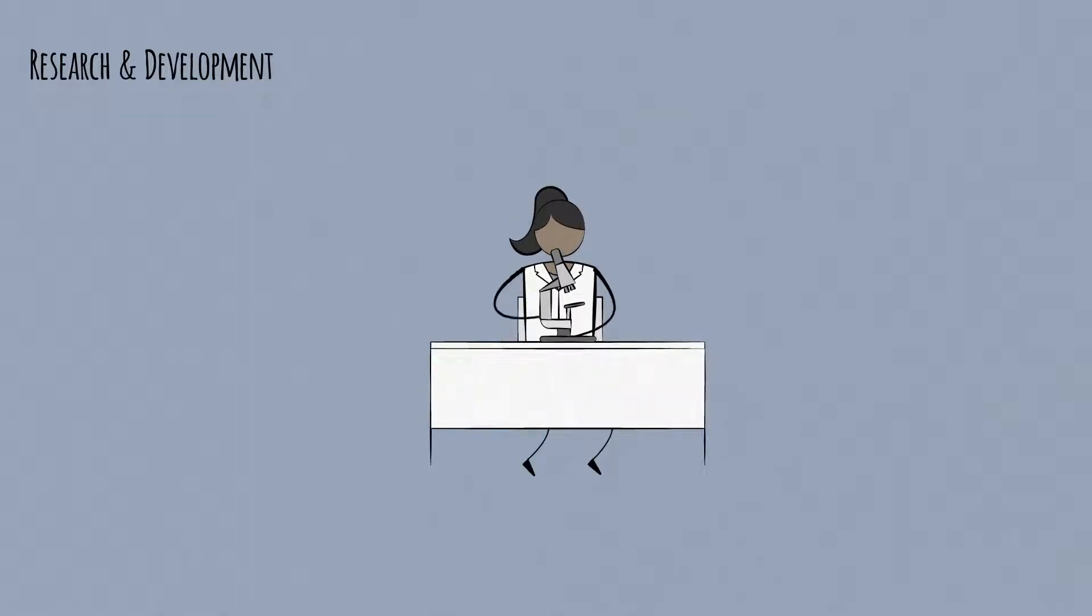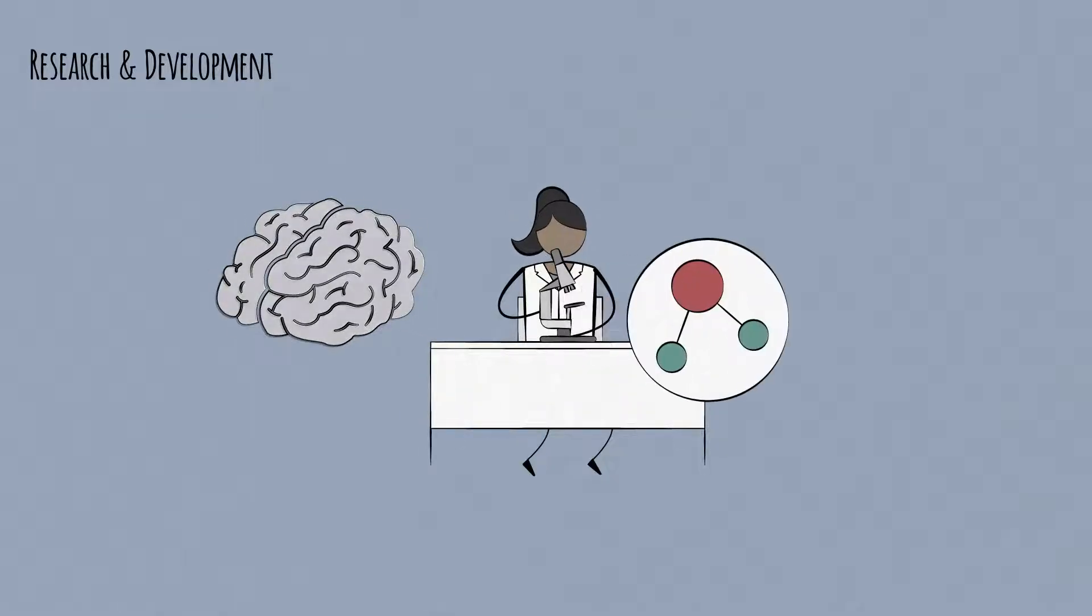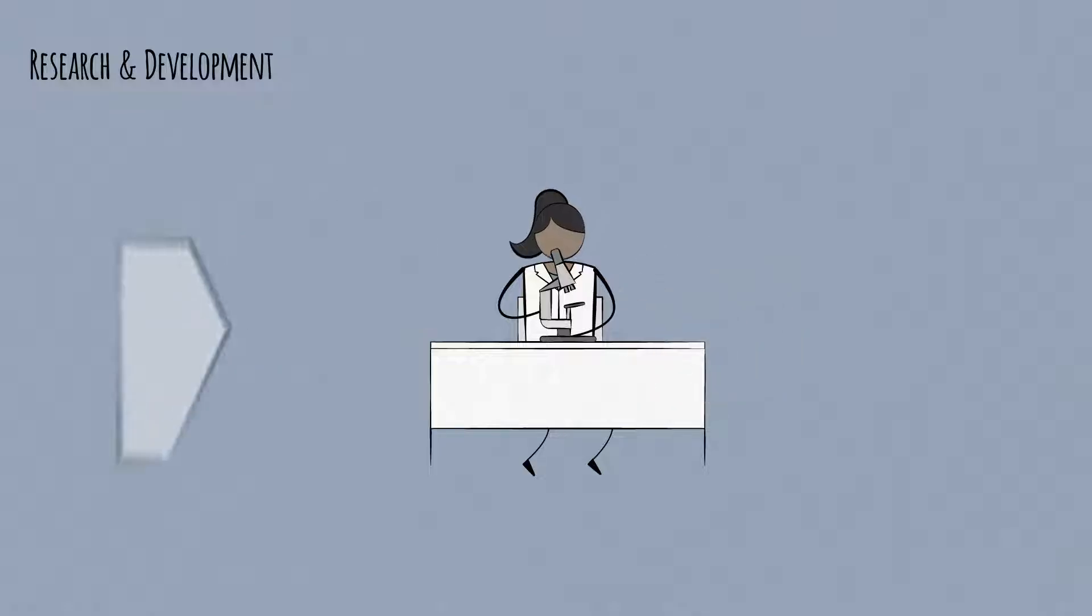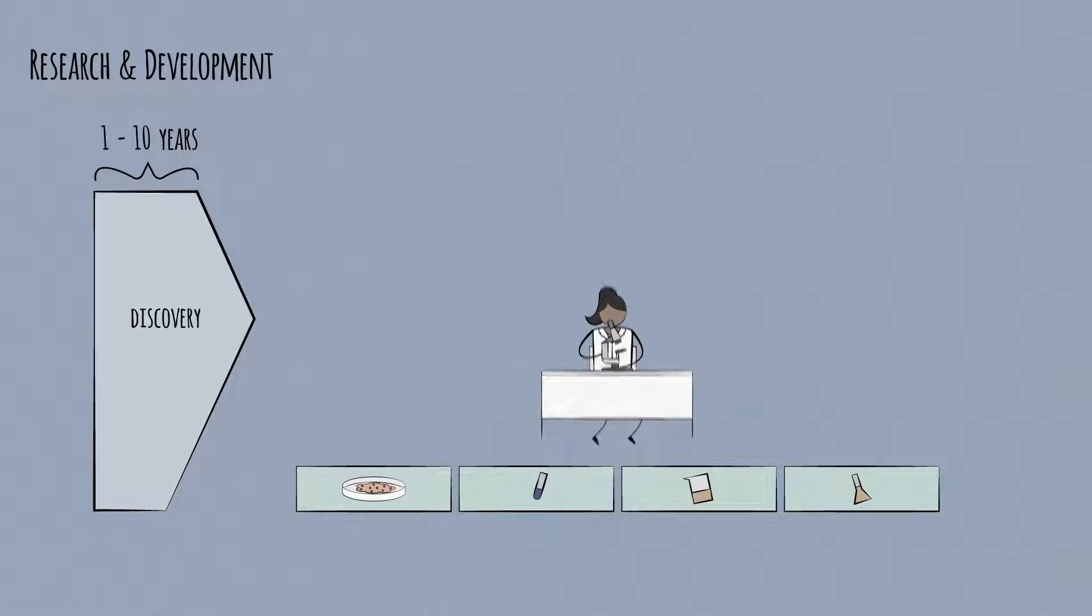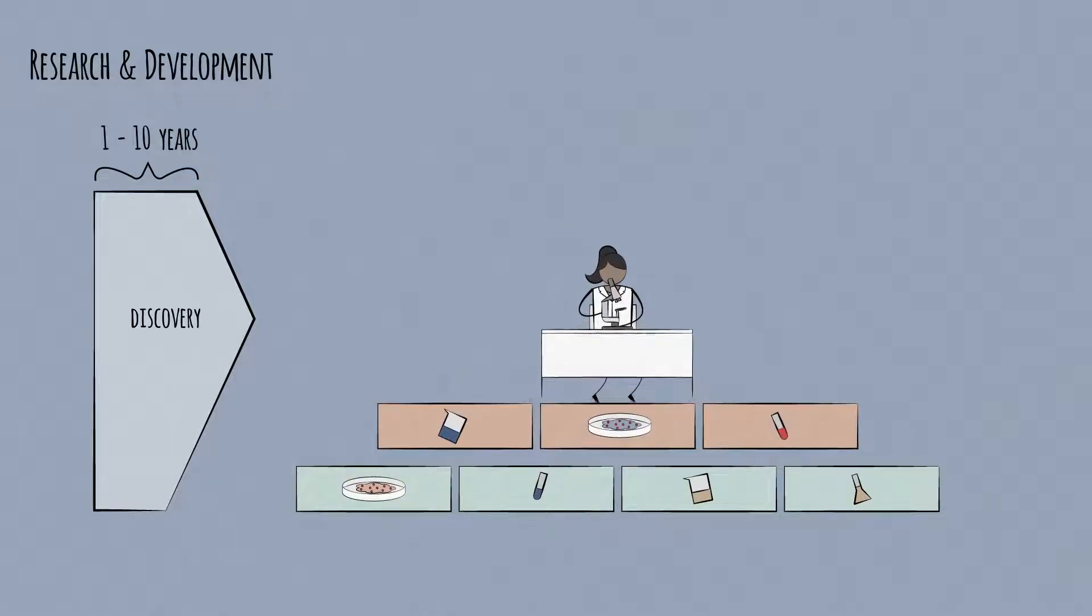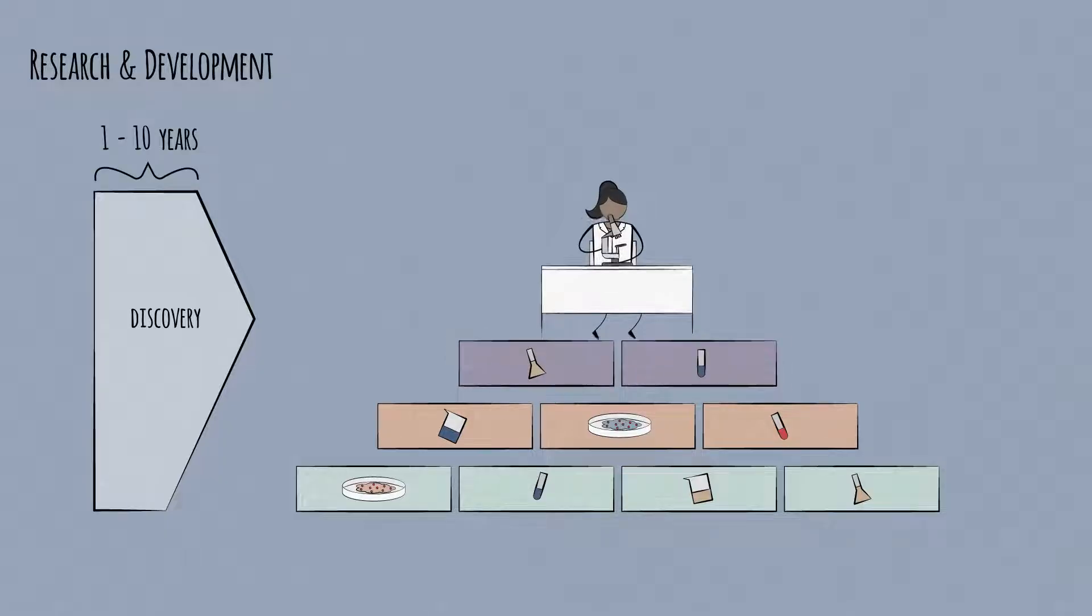During R&D, Anna's lab targeted a mechanism involved in Alzheimer's and found a molecule that slows it down, potentially delaying the progression of the disease. This discovery stage often lasts years and works off of research done by the broader scientific community. Some labs have been researching a cure for HIV for the past 30 years, for instance.